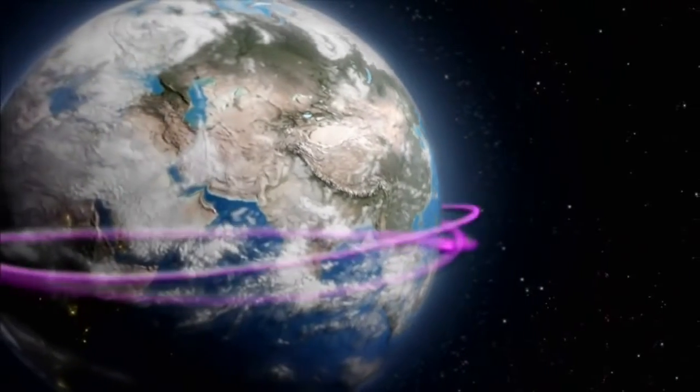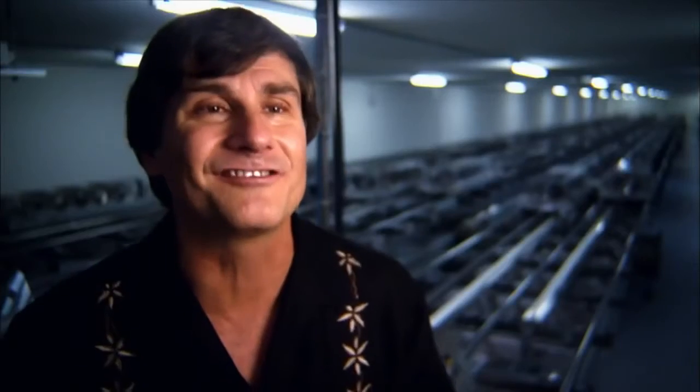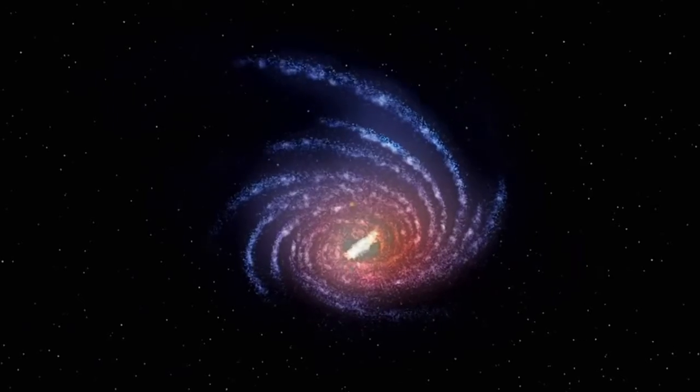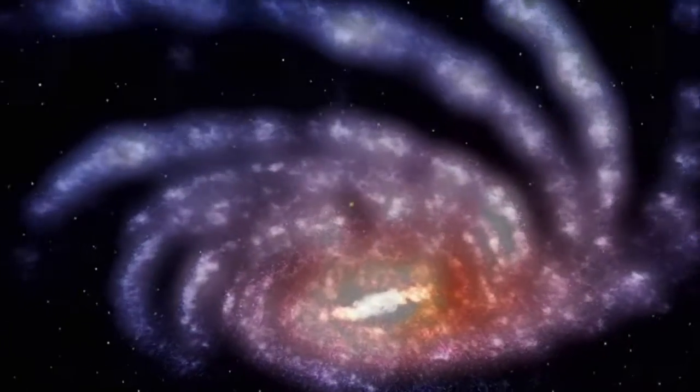Streaking through space, light is the fastest thing in the universe. It could circle the Earth seven times in one second. As it reaches us across vast distances, it reveals the history of the cosmos.